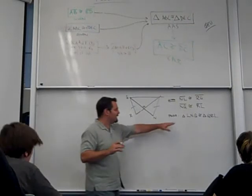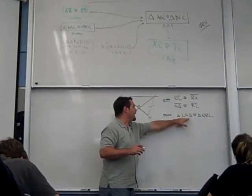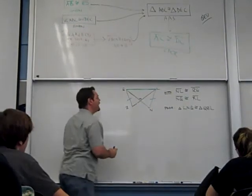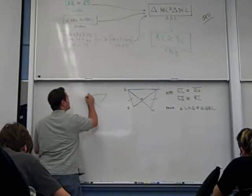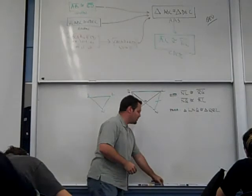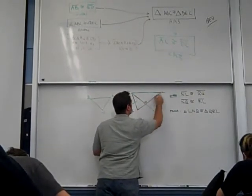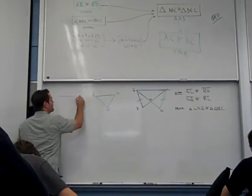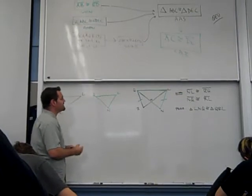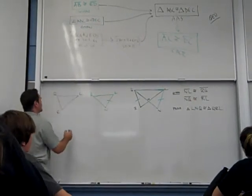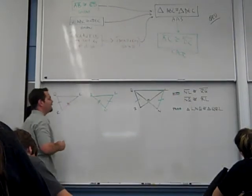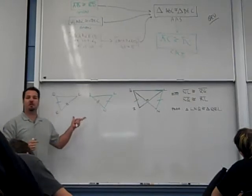With these overlapping problems, what I suggest you do is identify what triangles you're going after. L and Q, and redraw that triangle all separate. And the other triangle is QRL. Now it's easier to say, NL is congruent to RQ, and NQ is congruent to RL.